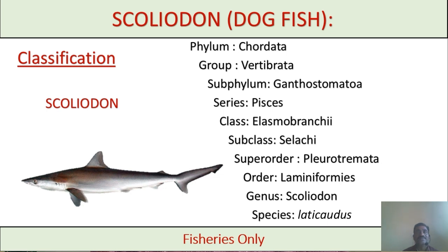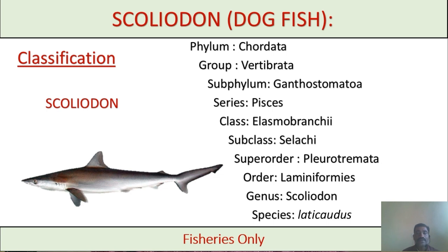Hepatic portal systems are present and blood contains RBC. Then subphylum Gnathostomata — 'gnath' means present and 'stomata' means mouth, so these are jawed mouths. Both jaws are present here.